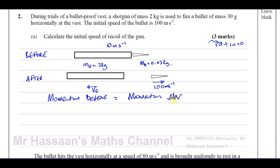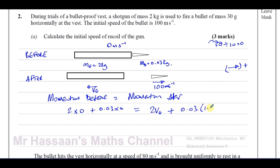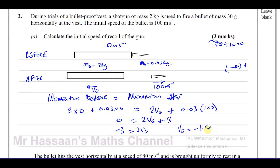The momentum before is zero: two times zero plus 0.03 times zero equals zero. After, taking the bullet's direction as positive, we have two times V_G plus 0.03 times 100. So zero equals 2V_G plus three. Subtracting three from both sides: negative three equals 2V_G, so the velocity of the gun is negative 1.5 meters per second.